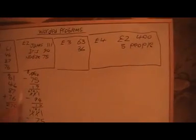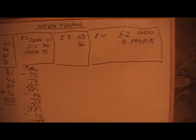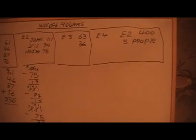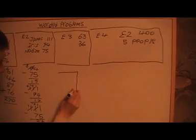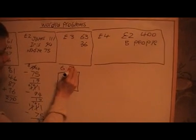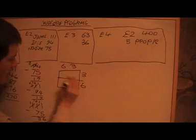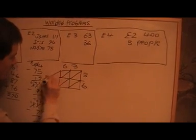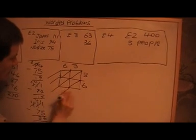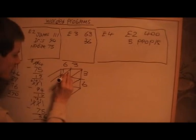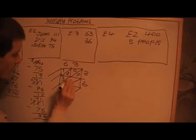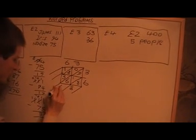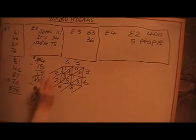The next problem is to find the product of these two numbers. When it says find the product of two numbers, it means we multiply. I'm going to use this method, though you can also use the other method I showed last time. So I've multiplied all of these: 18, 9, 36, and 18. We get 8, 10, 16 — carry the 1 — giving us 2268.